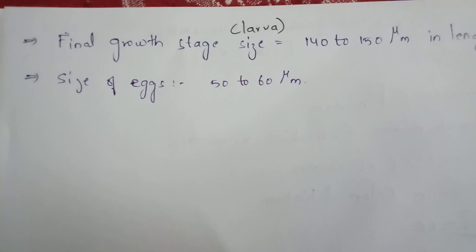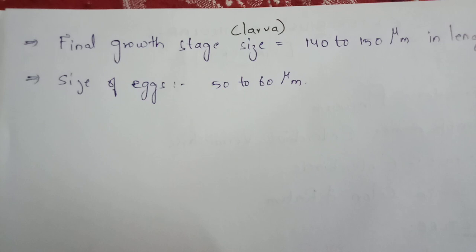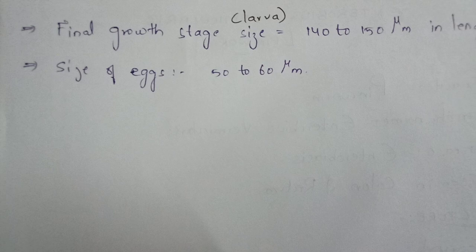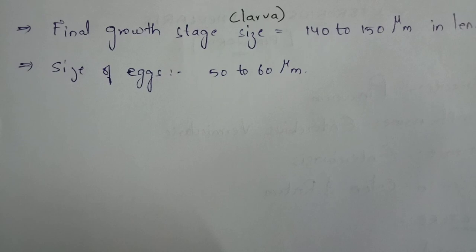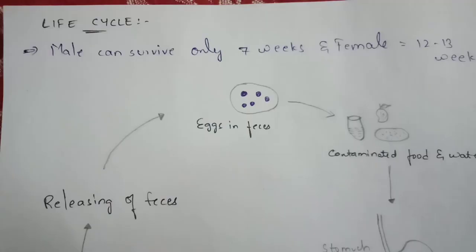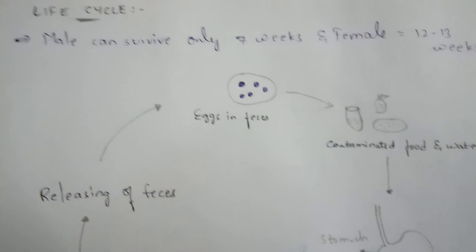After hatching of the egg, larvae are released. The final size of the larva is 140 to 150 micrometers in length. After copulation, eggs are released, and the size of each egg is 50 to 60 micrometers.